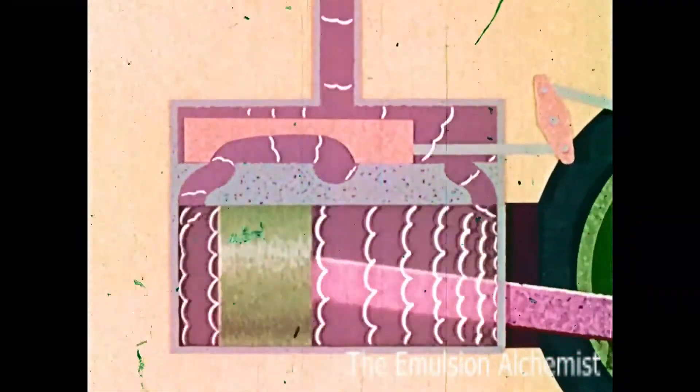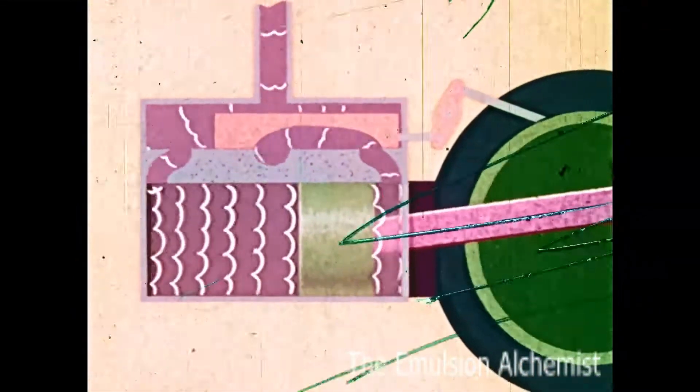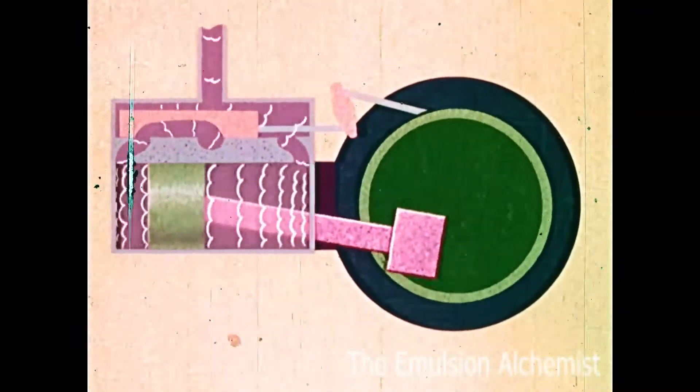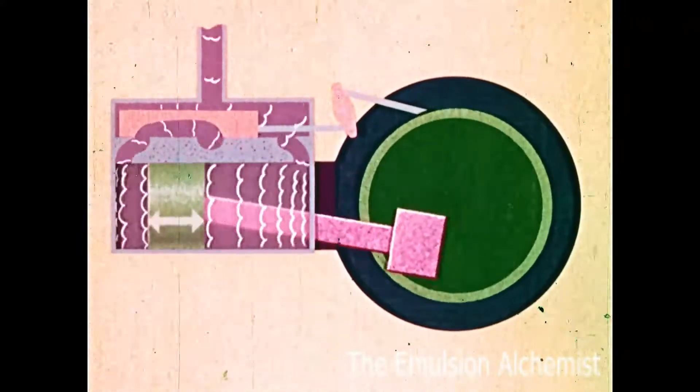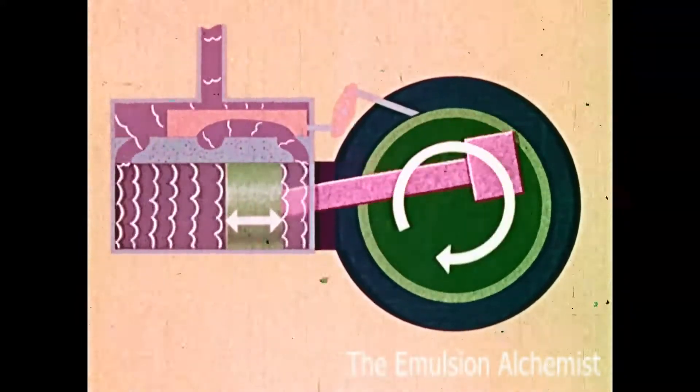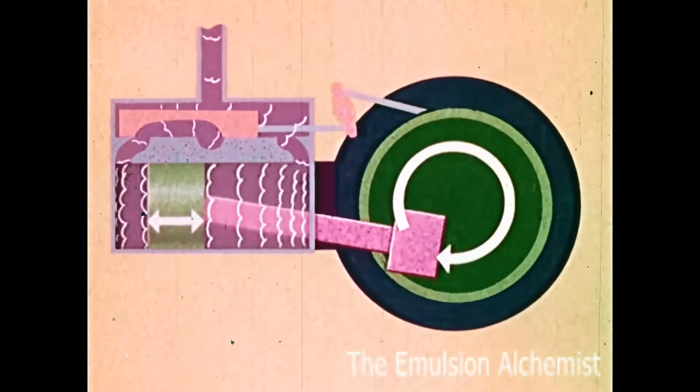The back and forth or reciprocating motion is converted to rotary motion by linking the piston rod to an off-center point on the flywheel. The cranking action thus produces rotary motion for turning shafts and wheels.